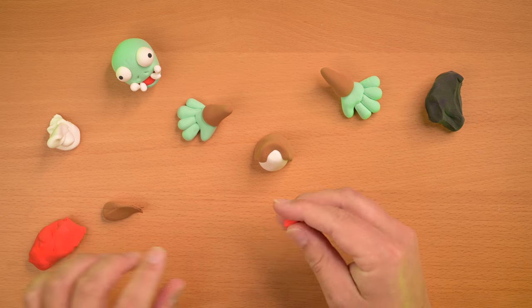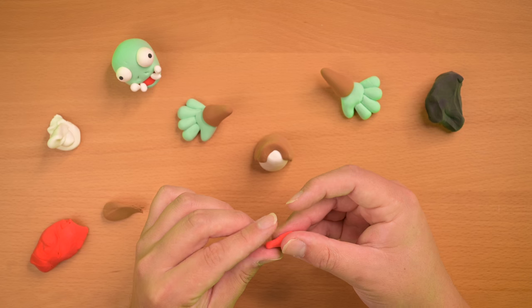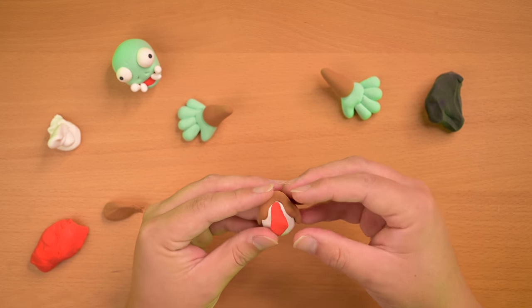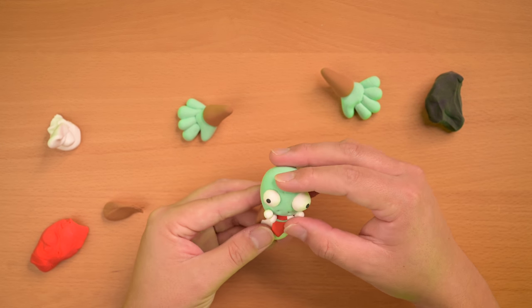Once that's good we're gonna make his tie. So the actual zombie tie in the game is striped but we don't have to have that. So we're just gonna make it a plain red. Make like a diamond shape. Plop that in. Put his head on top.